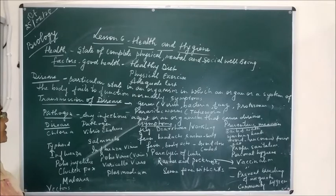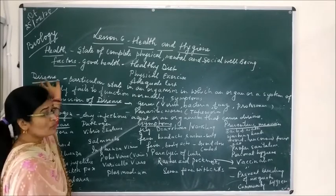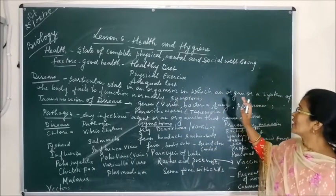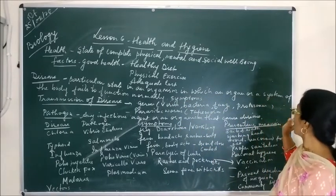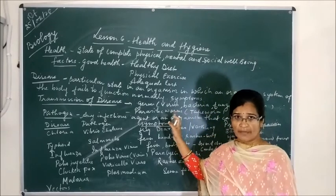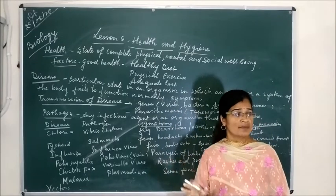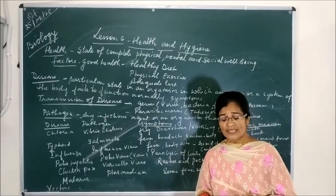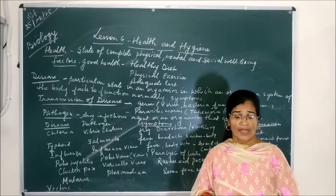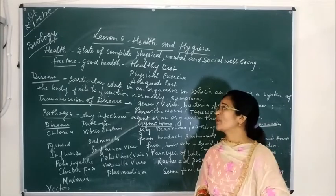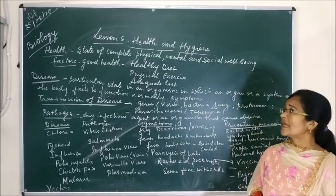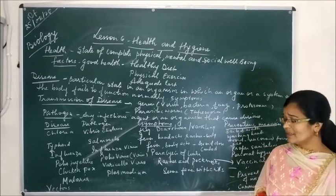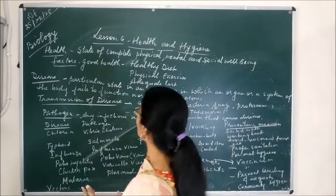Now whenever our body remains unhealthy, we are in one way or the other suffering from disease. Disease is a particular state in which the organism, organ, or system of the body fails to function normally. Whenever any organ or system of our body does not work properly, every organ and system has a particular function, and when they fail to function properly, we suffer from one or the other kind of disease.